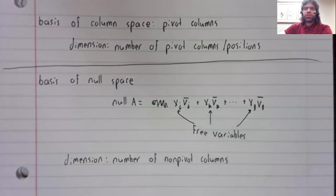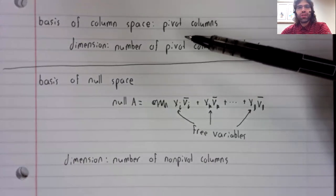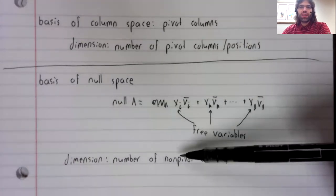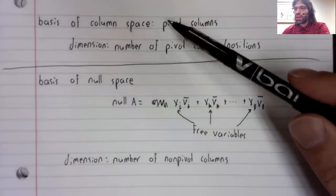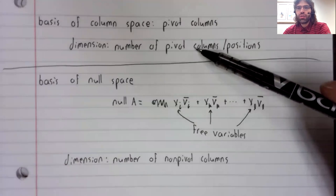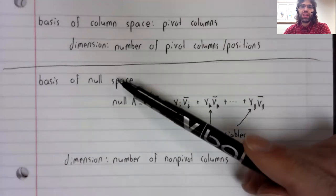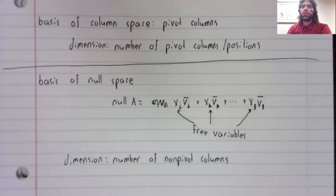Obviously, make sure not to get the column spaces and the null spaces confused. Column space: pivot columns. Null space: non-pivot columns.